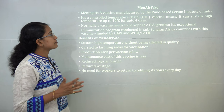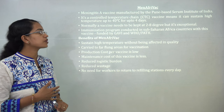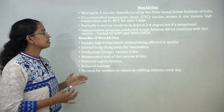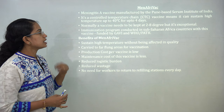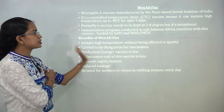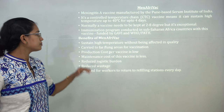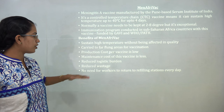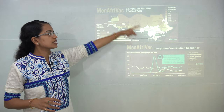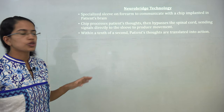MenAfriVac is a vaccine devised by the Pune-based Serum Institute of India. It is unique because it can sustain very high temperatures of 40 degrees Celsius for up to 4 days, whereas other vaccines must be kept at 2 to 8 degrees Celsius. It has been given in various sub-Saharan countries, funded by WHO and Gavi, and is used primarily to cure meningitis.